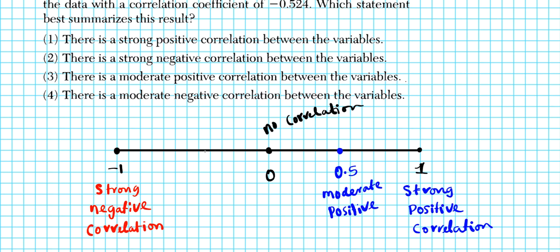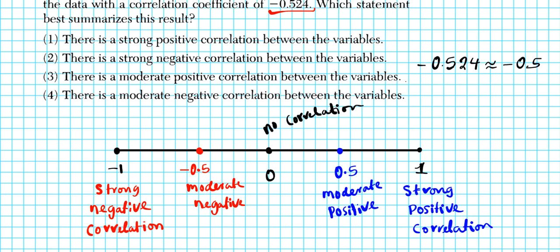Midway between negative 1 and 0 you have moderate negative correlation. Our value is negative 0.524, which rounded to the nearest tenth is negative 0.5 — right in that moderate negative range. So it is clearly a moderate negative correlation between the two variables. Option number 4 is the answer to question 3.